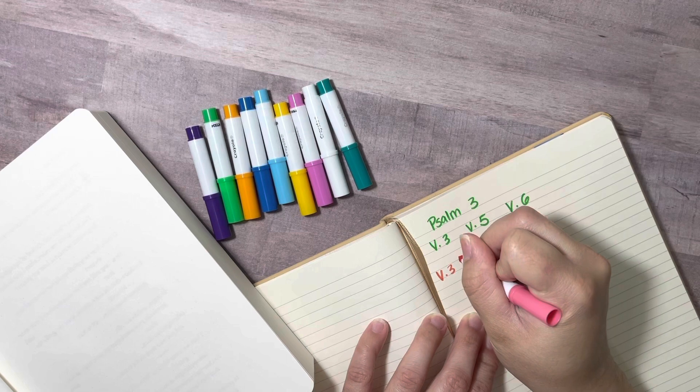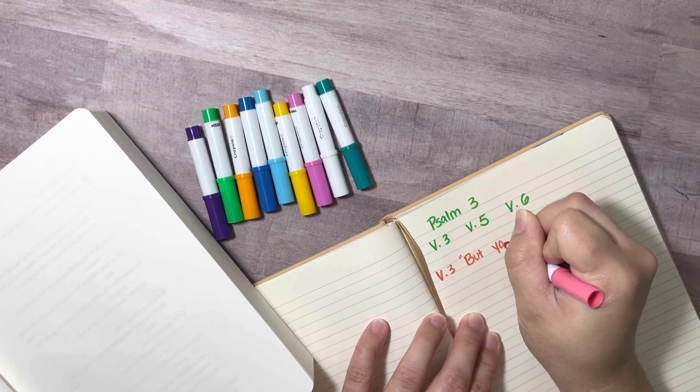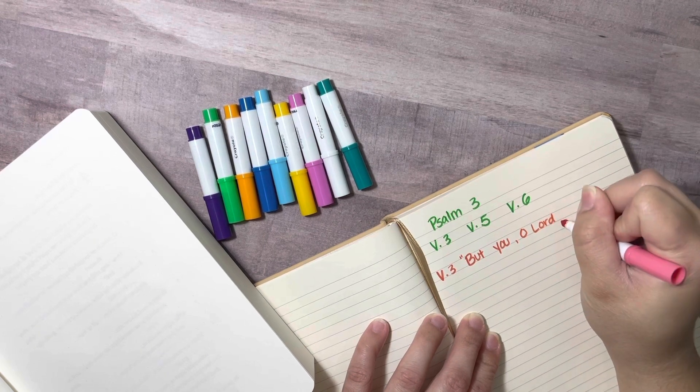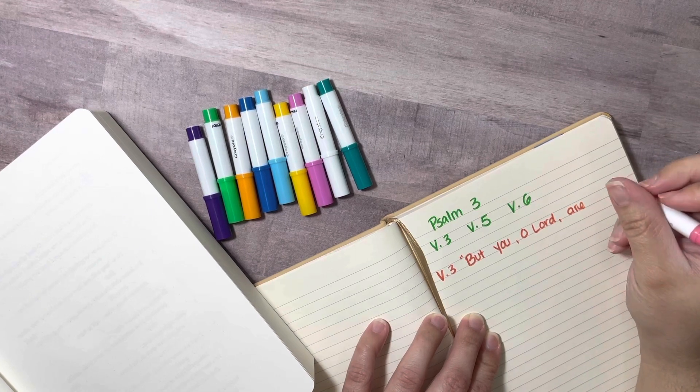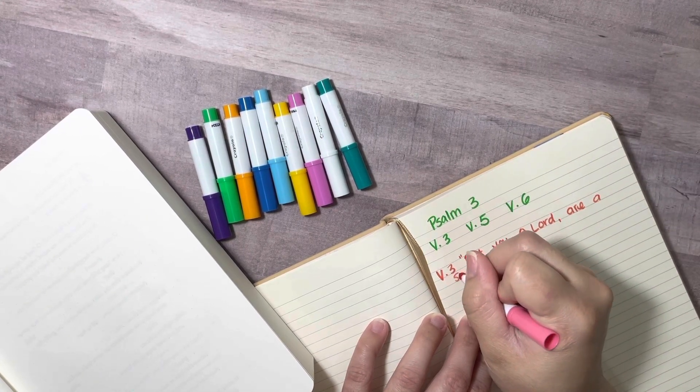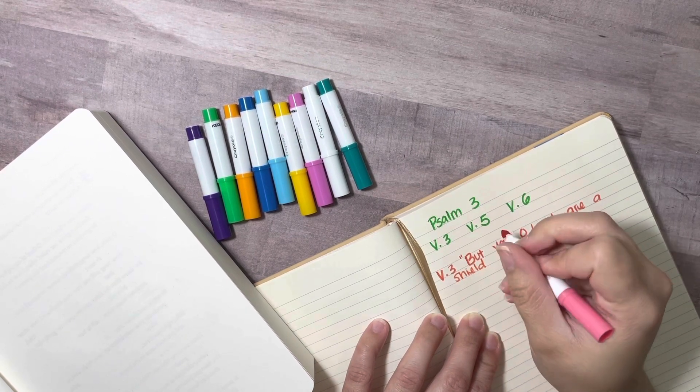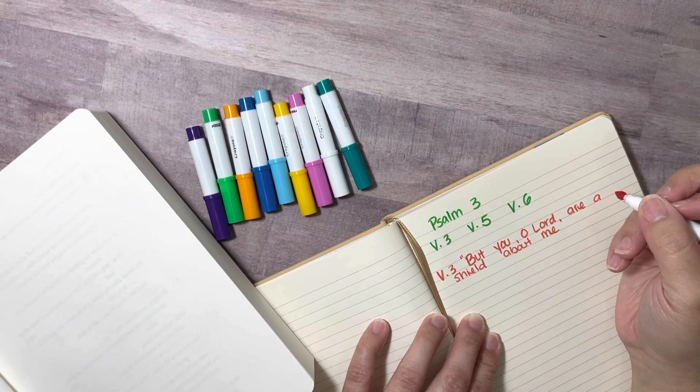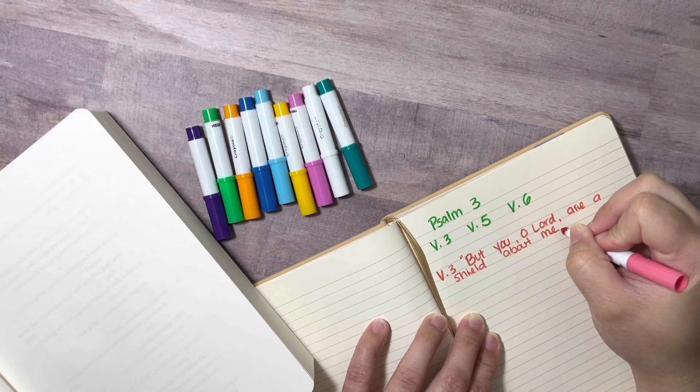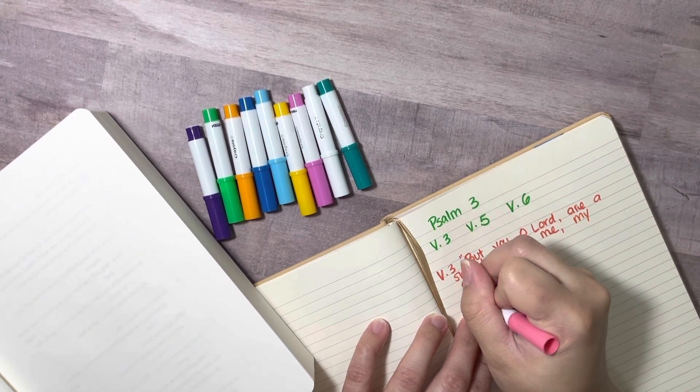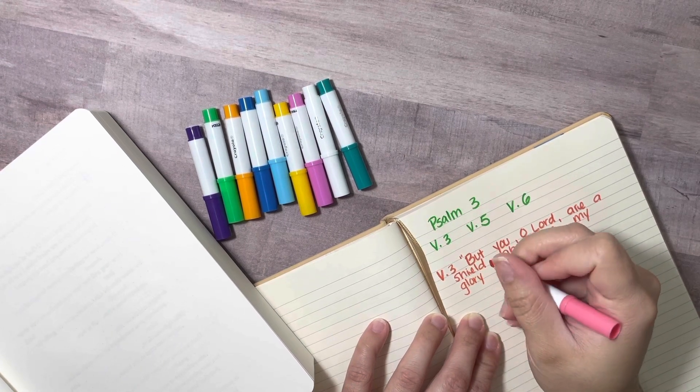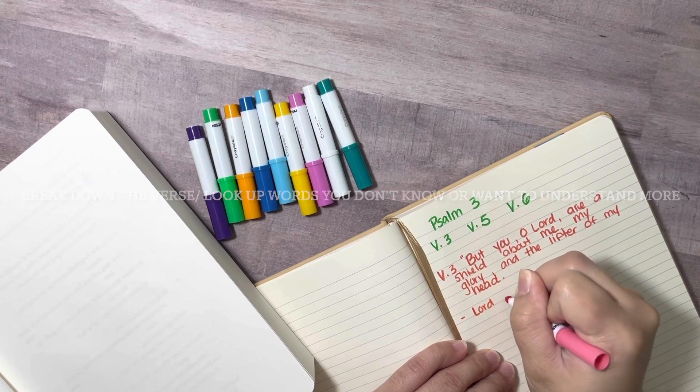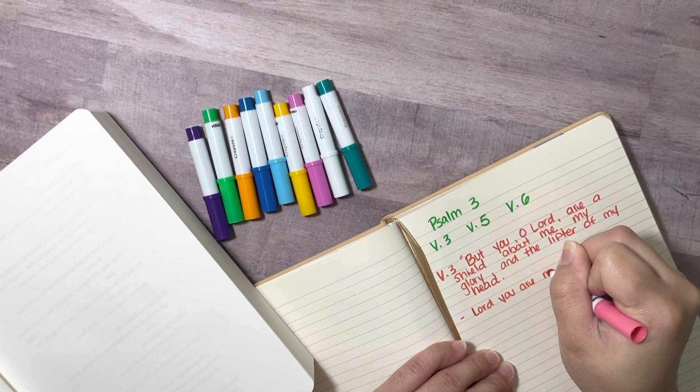So verse 3, the first thing that I really liked that stood out to me is that part that says, But you, O Lord, are a shield about me. So let me just jot this down. This is the part of the verse that really stood out to me. Or you can write out the entire verse just to help you. So let's do that. Let's just jot down the entire verse just so we can really focus on the parts that stand out the most to us. But you, O Lord, are a shield about me, my glory and the lifter of my head.